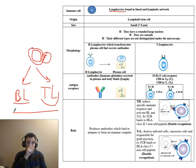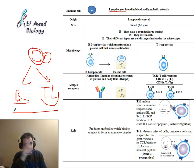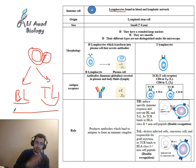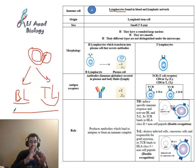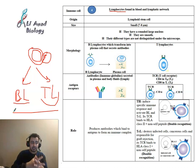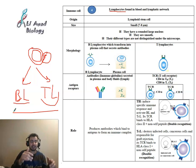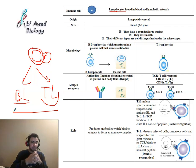B and T lymphocytes make a specific immune response. They recognize the specific antigen through their surface receptors. You have to focus on B lymphocytes and T lymphocytes because they are the basis of the immune response. Their characteristics and the different types of T lymphocytes will be explained in the next video.